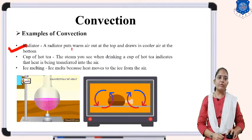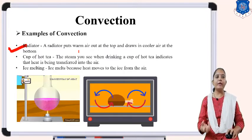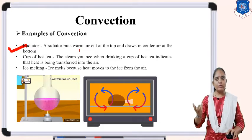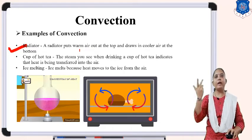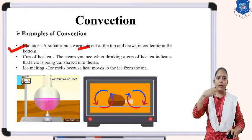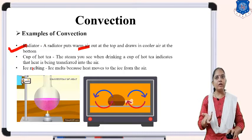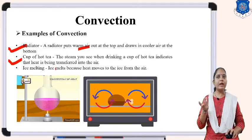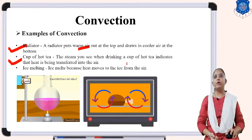Here are examples of natural convection. First is a radiator — in a radiator, warm air goes out at the top side and cooler air comes in from the downward side without any external force. This is an example of natural convection.